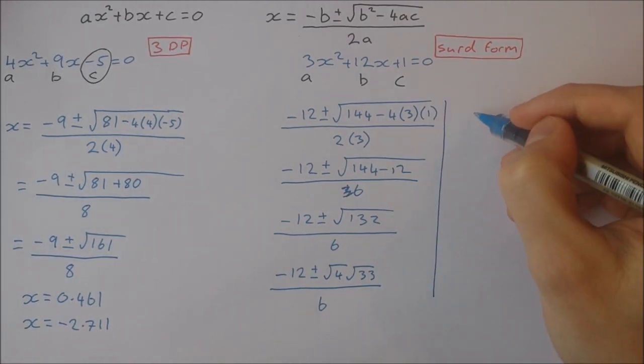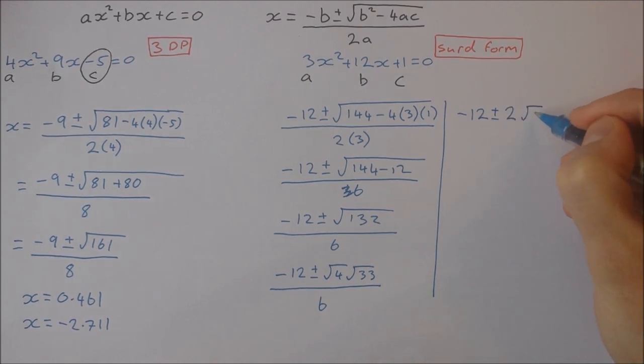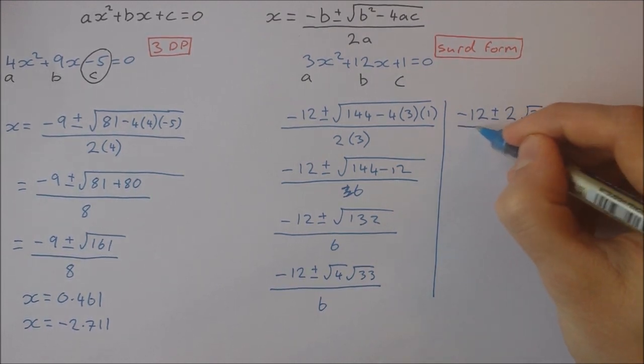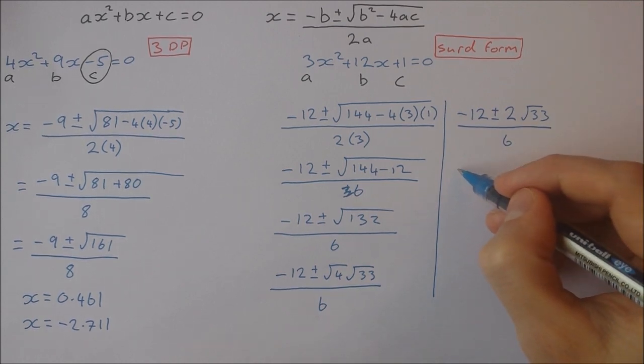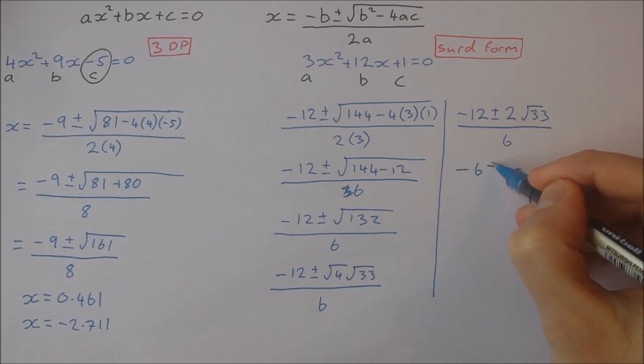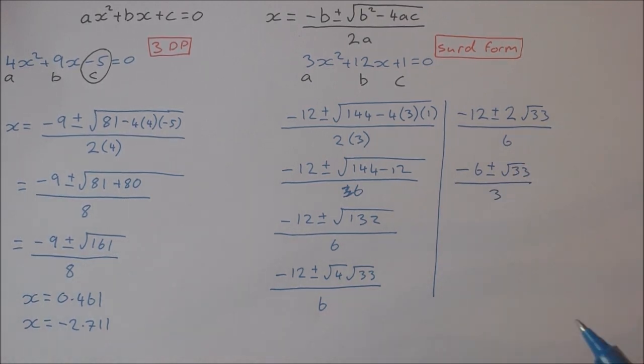Now I'll just take this up here, so minus 12 plus and minus the square root of 4 is 2, so it's 2 root 33 over 6. And now I can divide this term, this term, and this term all by 2, so I get minus 6 plus and minus the square root of 33 over 3. And that is my answer left in surd form.